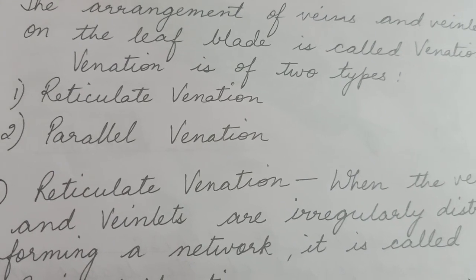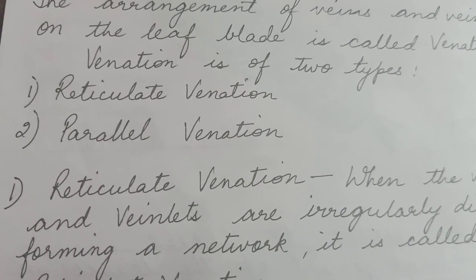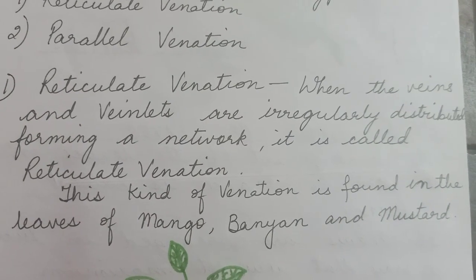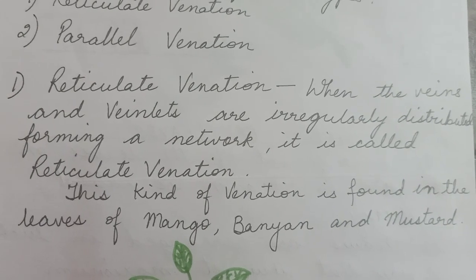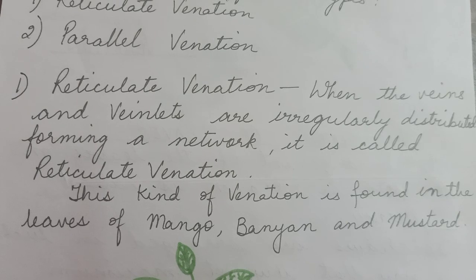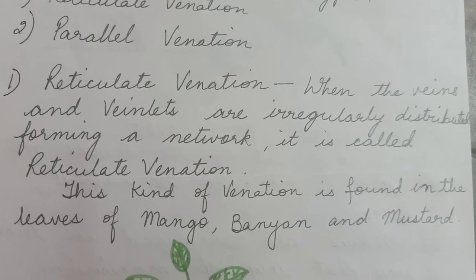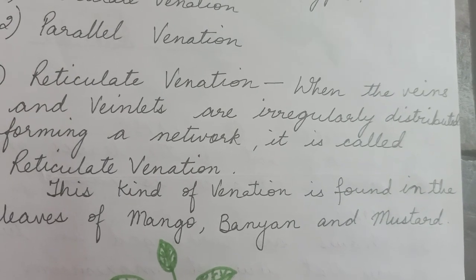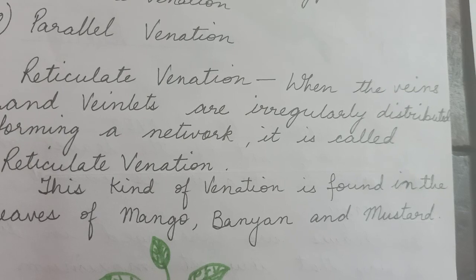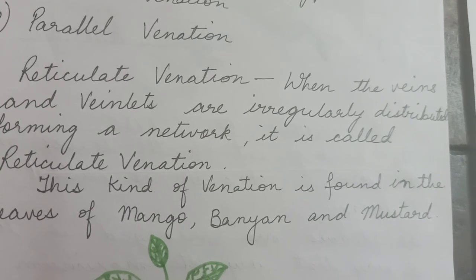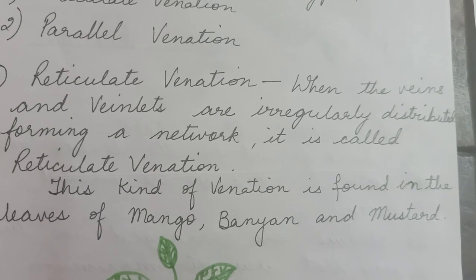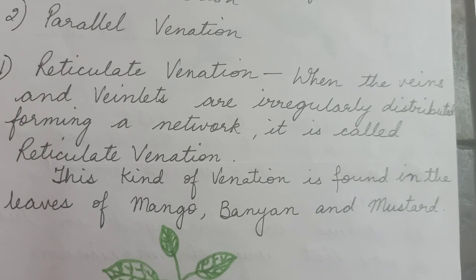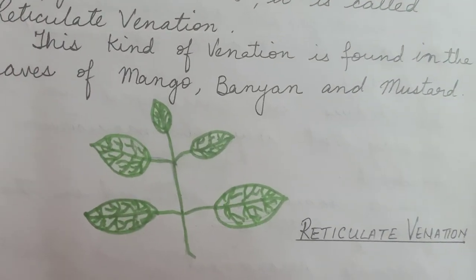Venation is of two types: one is reticulate venation and the other one is parallel venation. Reticulate venation — when the veins and veinlets are irregularly distributed forming a network, it is called reticulate venation. The veins are present inside the leaves in an irregular manner forming a network, and this type of venation is known as reticulate venation. We can see it in the leaves of mango, banyan, and mustard.